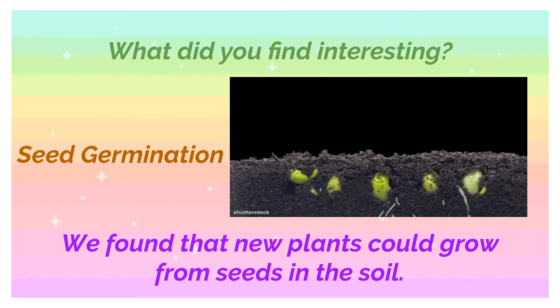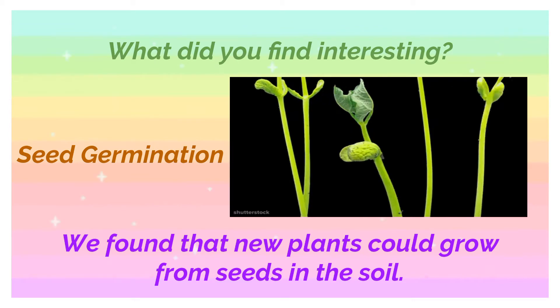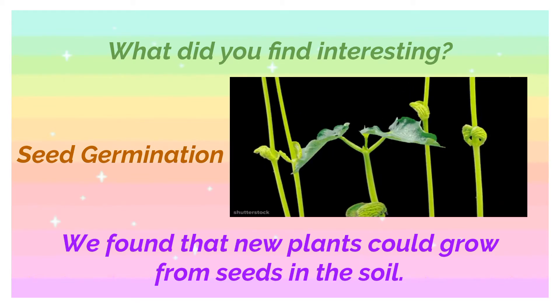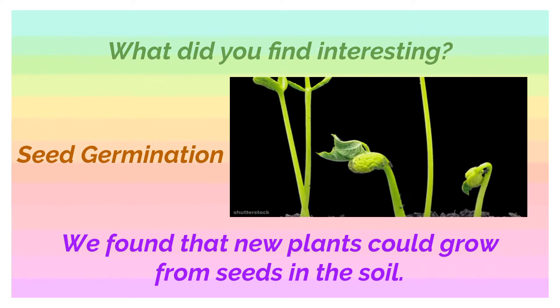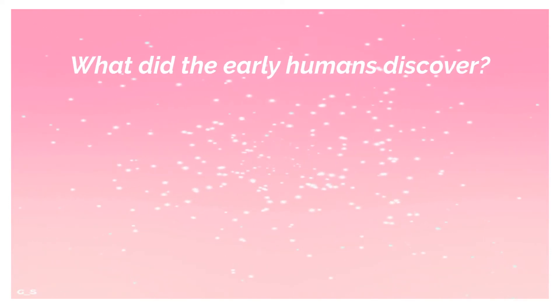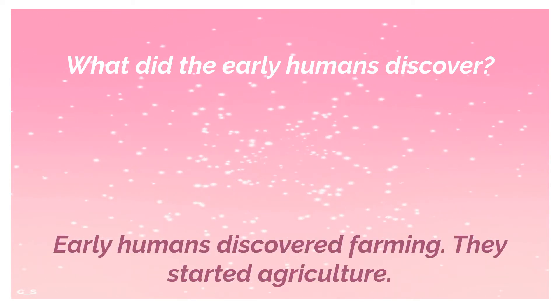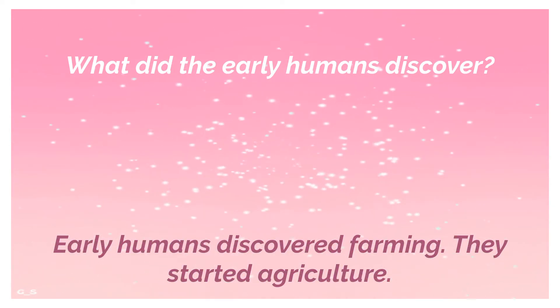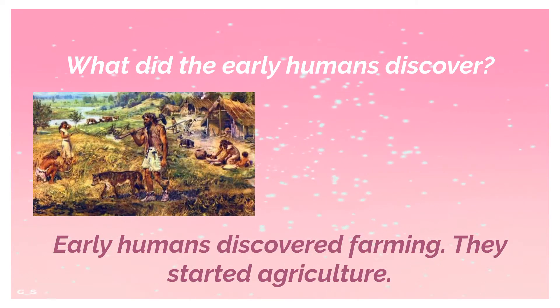What did the early humans discover? Early humans discovered farming and they started agriculture, as you can see on your screen. How did early humans begin farming? Early humans grew new plants by sowing seeds in the soil. Soon they began to collect and spread seeds on the land to grow different crops like wheat and barley and eat them for food.